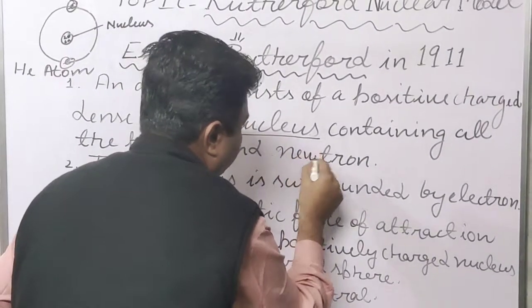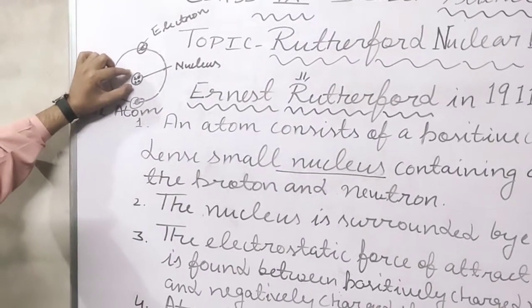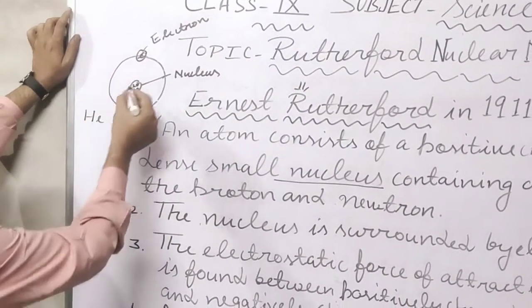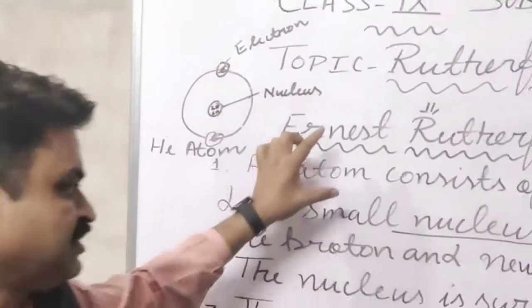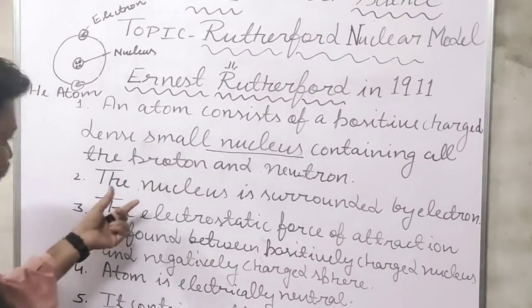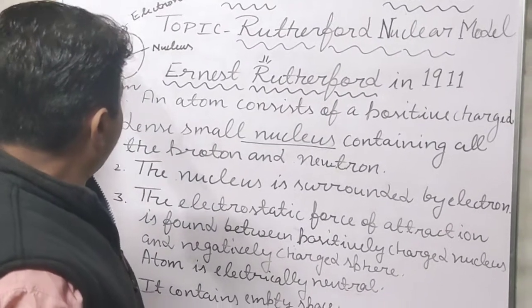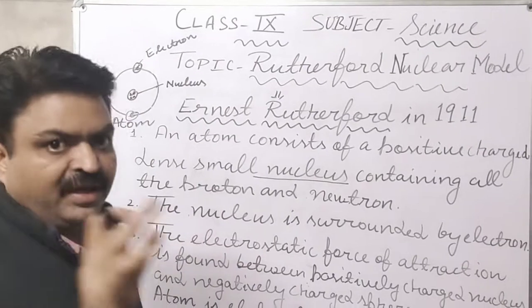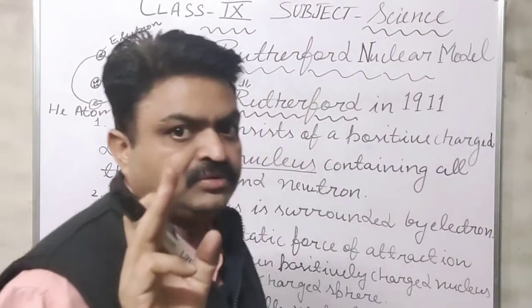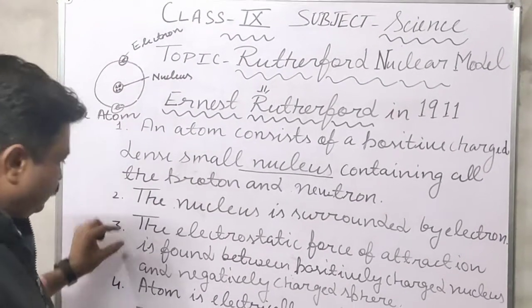The nucleus contains all the protons and neutrons. For example, the nucleus of helium contains two protons and two neutrons. The second conclusion was that the nucleus is surrounded by electrons — around the nucleus, electrons are found. In helium, there are two electrons surrounding the nucleus.